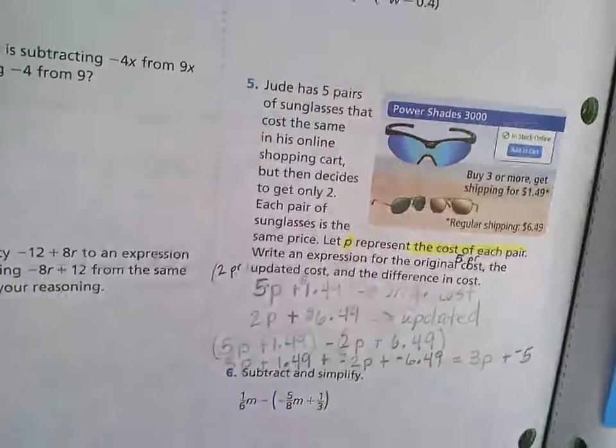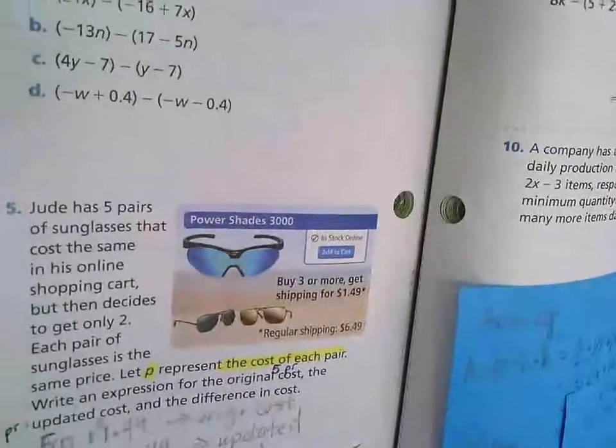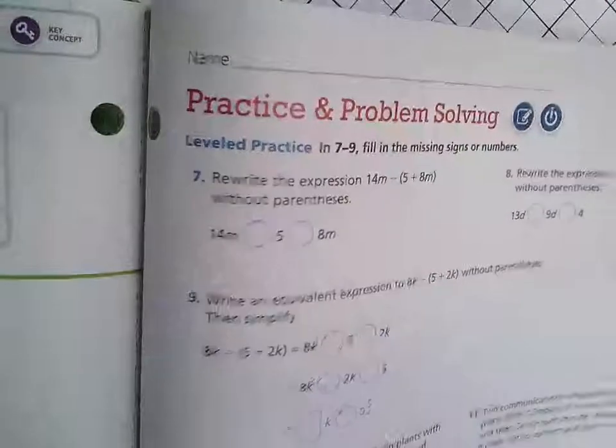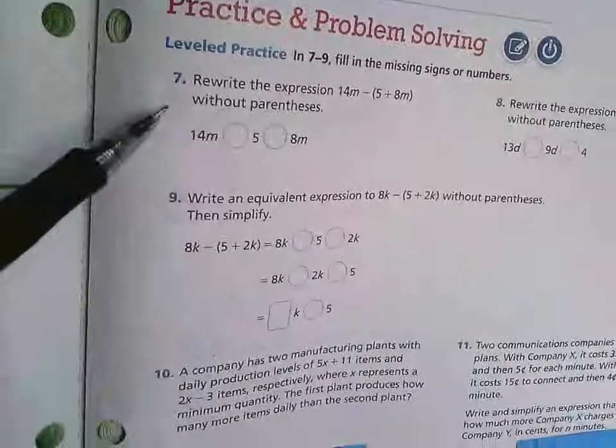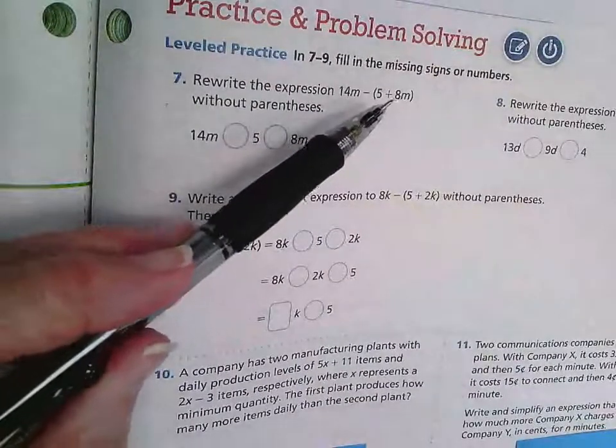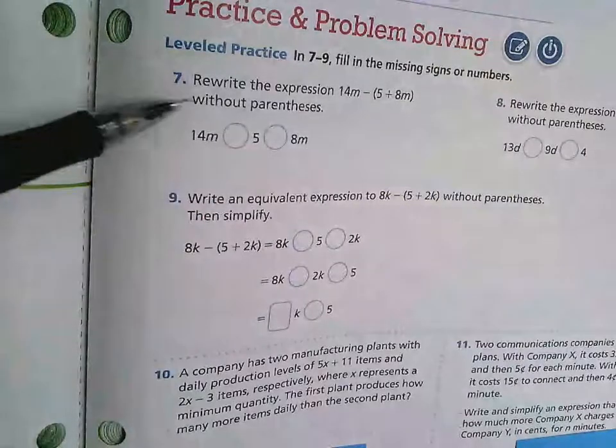Number 7, page 313. Rewrite the expression 14m minus parentheses 5 plus 8m without parentheses.